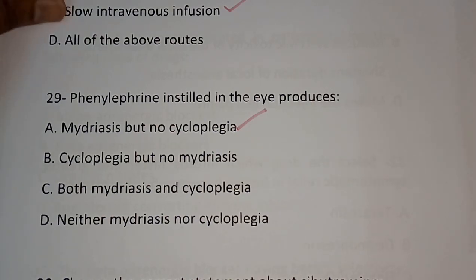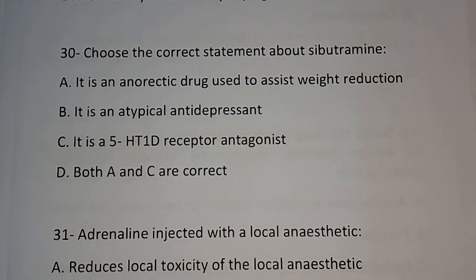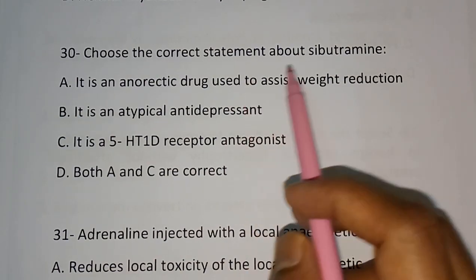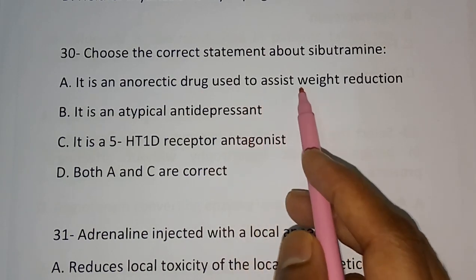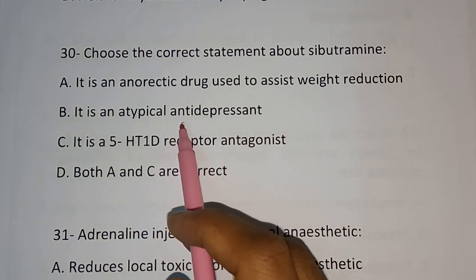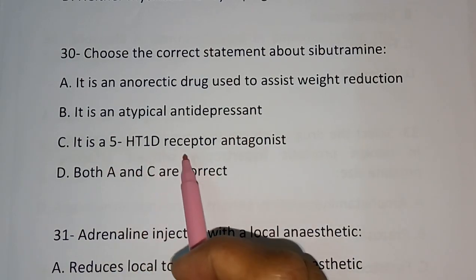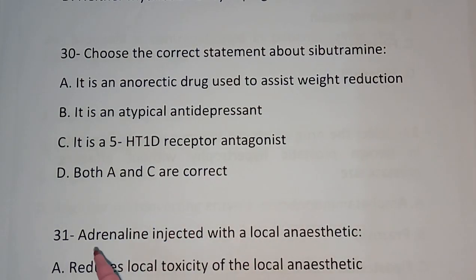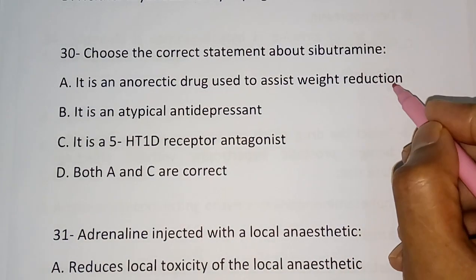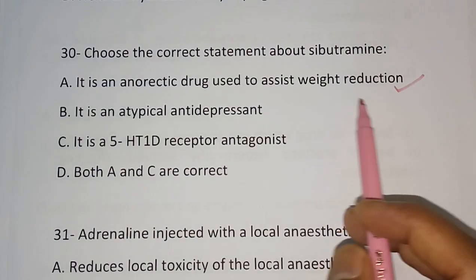Question number 30: Choose the correct statement about Sibutramine — It is an anorectic drug used to assist weight reduction, It is an atypical antidepressant, It is a 5-HT 1-D receptor antagonist, Both A and C are correct. The correct answer is: It is an anorectic drug used to assist weight reduction.